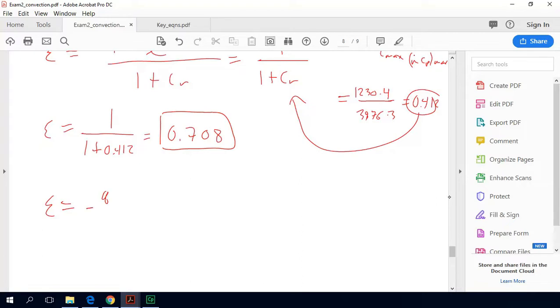So our effectiveness is defined as Q over Q max, where Q will use the fluid A definition of Q. So m dot Cp A times, because A is our cold fluid, we're going to do outlet minus our inlet. So that's how much heat our heat exchanger would actually transfer, and the maximum possible amount of heat that our heat exchanger could transfer, if it were designed differently, would be m dot Cp would put the minimum fluid here, which is fluid A, and this is our hot fluid inlet temperature, which is T B in minus our cold fluid inlet temperature, which is T A in.